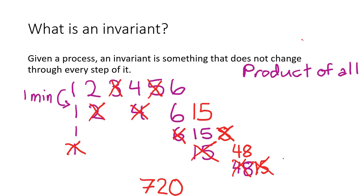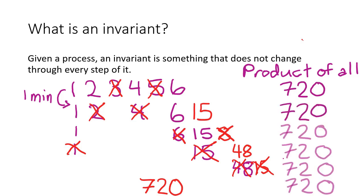Throughout the entire process, after each minute, the total product stays the same. So when the process ends with just one number left, it has to be the product of all the original elements, which is 720.